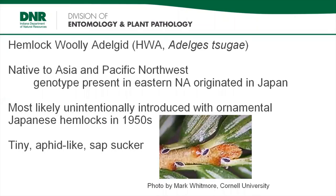Next up is hemlock woolly adelgid. These sap suckers can be found in western North America, where they have likely been present for thousands of years and cause only minor damage to western hemlocks due to natural predators and some host resistance. Populations found in the eastern U.S., however, are genetically linked to populations in Japan. It was first likely introduced into Richmond, Virginia in the 1950s on nursery stock, making it a destructive pest with no natural enemies or host resistance in this area. HWA is all female in northeastern North America, develops asexually, has six stages of development — an egg, four nymphal instars, and an adult — with two overlapping generations per year.